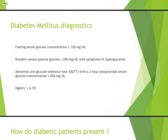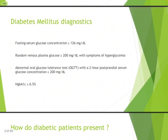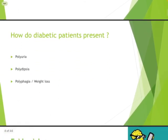Diabetic patients present with polyuria, polydipsia, and polyphagia with weight loss. Insulin is an anabolic hormone, so in the absence of insulin or insufficient production of insulin, our body shifts into a catabolic state. That's why patients manifest with polyphagia and weight loss.